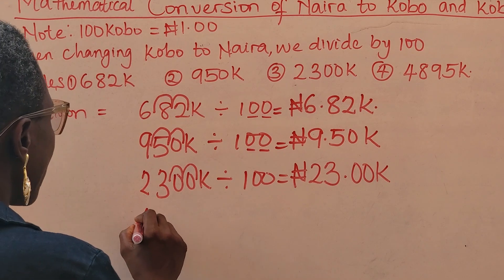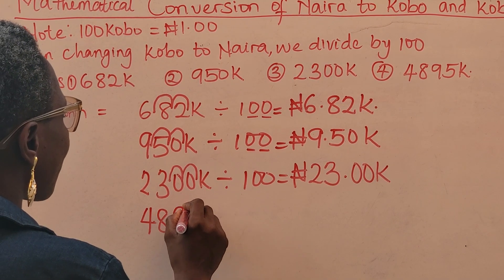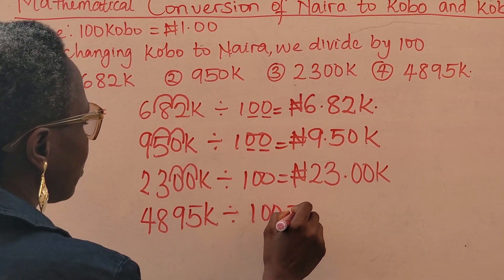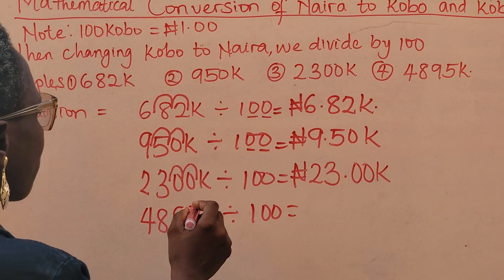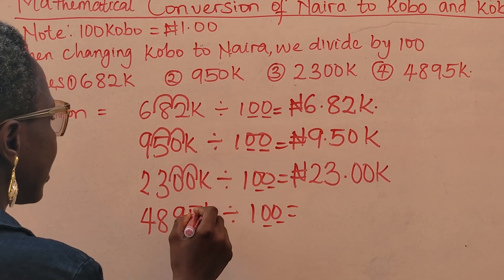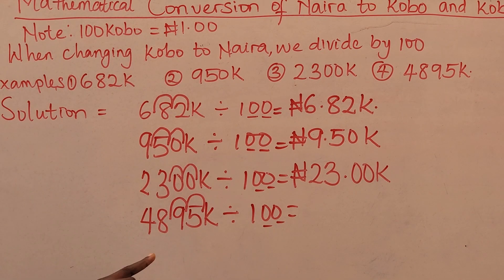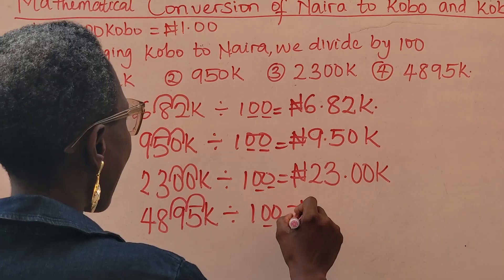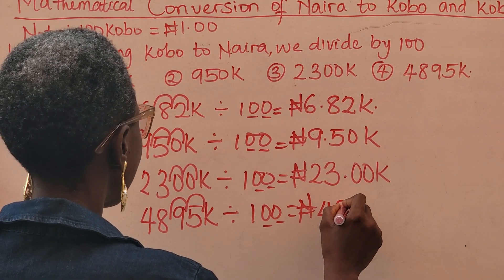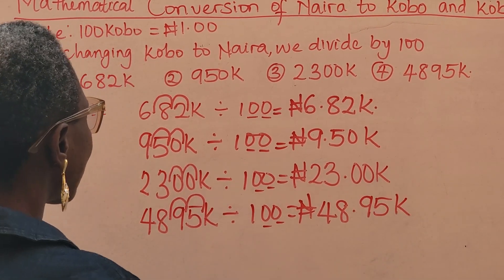The last question on the board: 4895 kobo divided by 100. I move the decimal point twice — one and two. The decimal point is now between 8 and 9, so the answer is 48 naira 95 kobo.